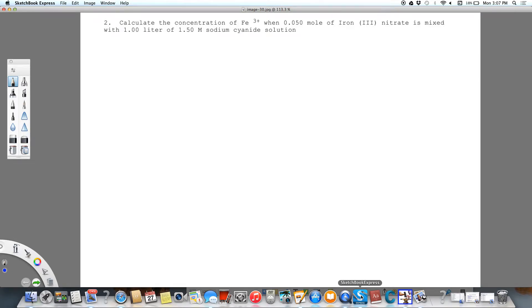All right, we're going to calculate the concentration of iron-3 when we add a small amount of iron-3 nitrate and we mix it in one liter of 1.5-molar sodium cyanide solution.